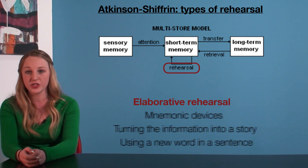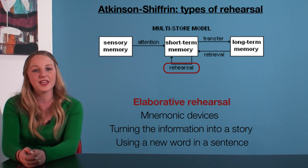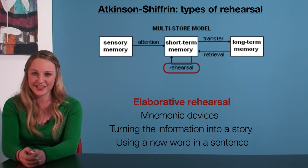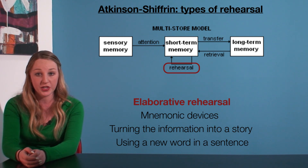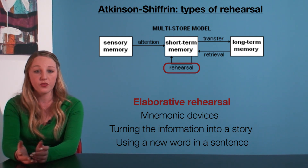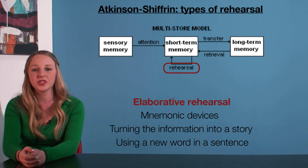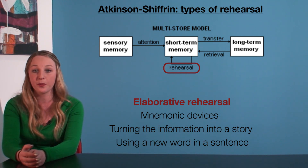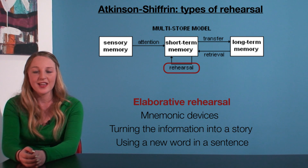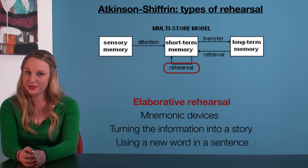We can do this by using mnemonic devices such as acronyms or abbreviations, by turning the information into a story, or simply by using a new word in a sentence. For example, if you're trying to use the word 'appreciate' but struggle to remember its meaning — 'recognise the worth of' — we can use it in the sentence: 'I truly appreciate this psychology video.' The new word 'appreciate' is being used in context; it is being linked to what we already know. This is elaborative rehearsal.